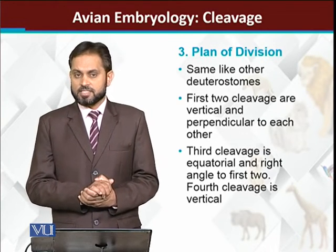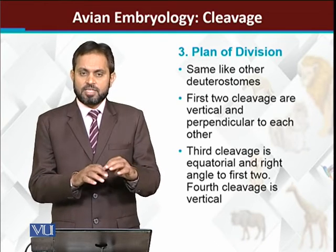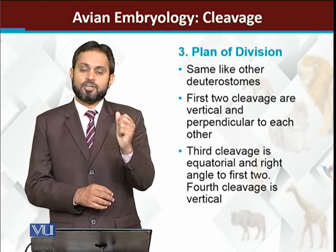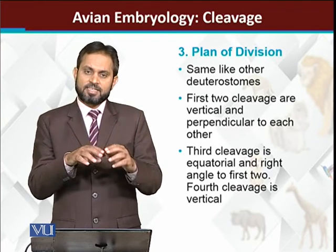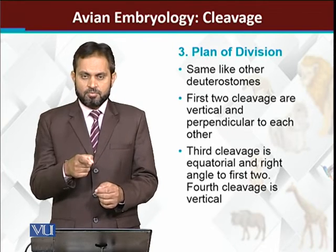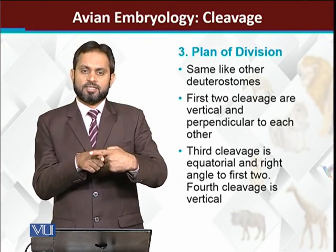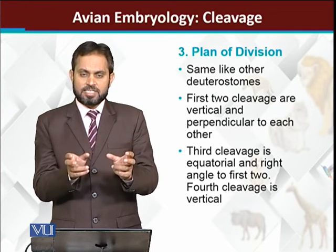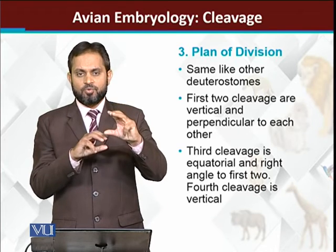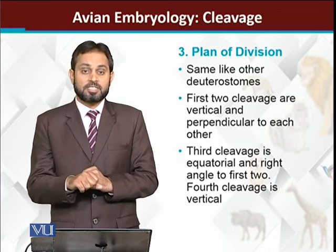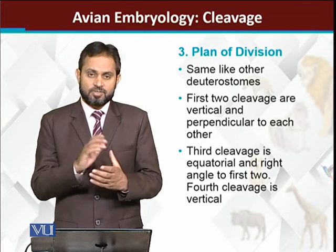Cleavage किस तरह से proceed करेगी — कहाँ से start होगी? Birds में, जैसा हमने कहा, जो area yolk-covered नहीं है, cleavage वहीं होगी। पहली cleavage एक cell को two cells में divide करती है। दूसरी cleavage इसके बिलकुल rectangular form में आती है — two cells से four cells बन जाती हैं। Third cleavage horizontal होती है, जिससे cells के दो tiers बनते हैं: four cells ऊपर और four cells नीचे। Fourth cleavage again vertical होती है, हर cell को दो में divide करती है — जिससे 16 cells की stage आ जाती है।